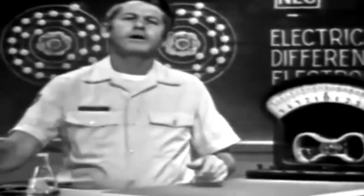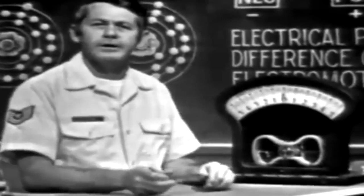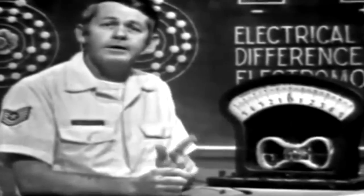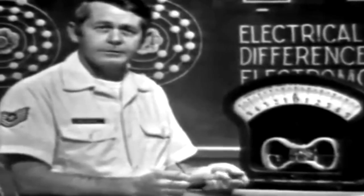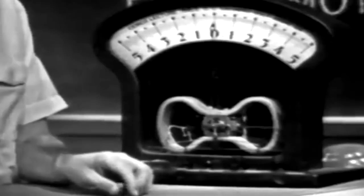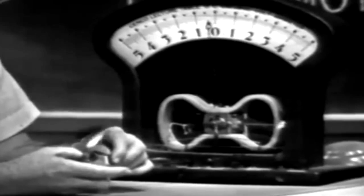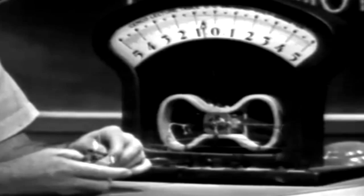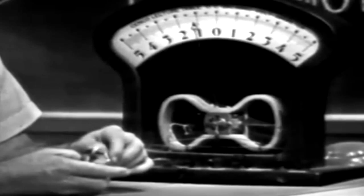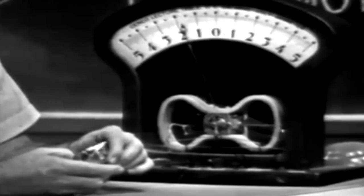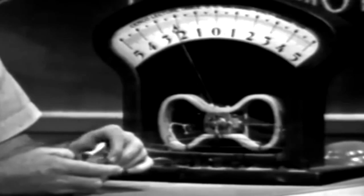A voltage can also be produced by applying heat to certain materials. For example, if I connect this device to the meter and apply heat, we should get an indication of voltage. Let's try. Applying heat to the device, notice that as it heats up, the meter indicates a voltage. The more I heat it, the more voltage.